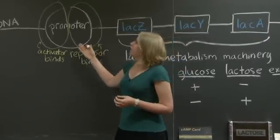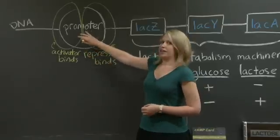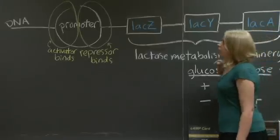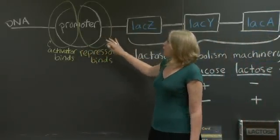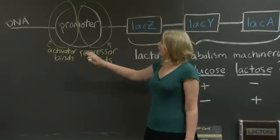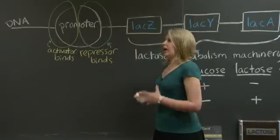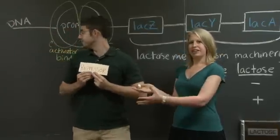The promoter is where RNA polymerase binds, and RNA polymerase needs to bind to this promoter in order to transcribe and express these genes. In this particular promoter, we have a site where a repressor can bind, and a site where an activator can bind. So, I have a repressor, and I have an activator.